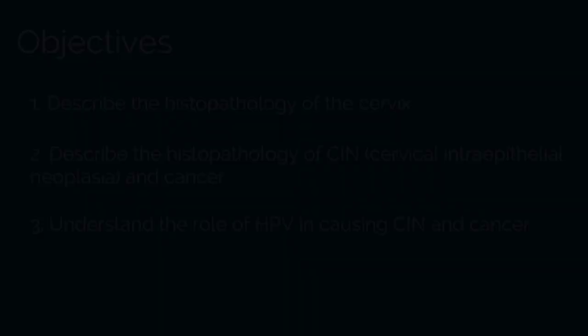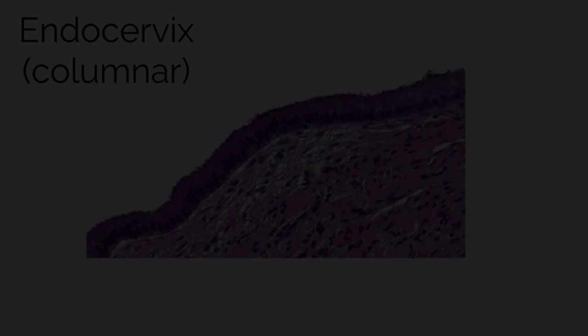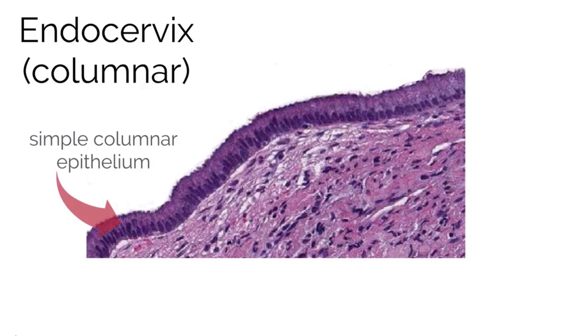Let's start by reviewing the anatomy of the cervix. The ectocervix is covered in squamous epithelium, seen in red on this illustration, and is the part of the cervix that is seen on speculum exam. In green, the endocervix including the cervical canal is covered with mucus secreting columnar epithelium. The squamous columnar junction is where the two types of epithelium meet. On a microscopic level, the endocervix has simple columnar epithelium on a thick lamina propria with mucus secreting cervical glands. The ectocervix has non-keratinized stratified squamous epithelium.